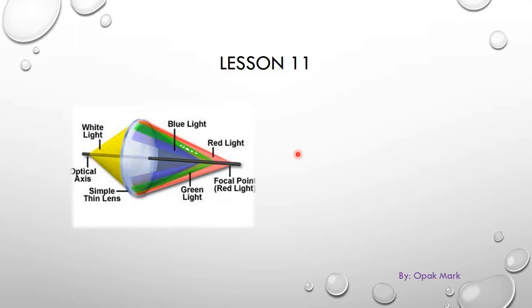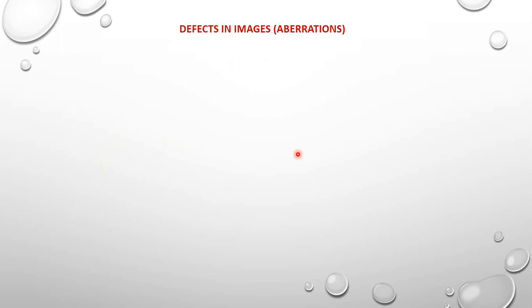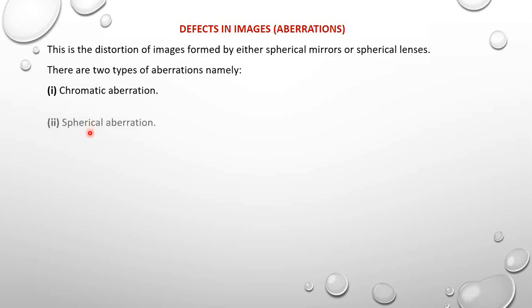Hello, welcome to lesson 11. In this lesson we are going to look at defects in images, or what we call aberrations. Aberrations are the distortion of images formed by either spherical mirrors or spherical lenses. There are two types of aberrations: chromatic aberration and spherical aberration.